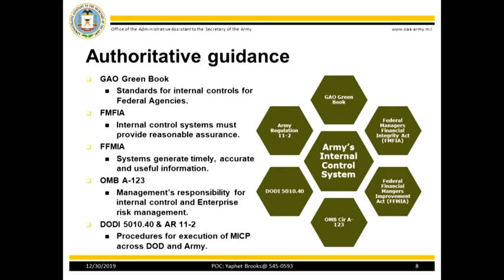The Office of Management and Budget Circular A-123 defines management's responsibility for internal controls. This circular, which was most recently updated in June 2018, adds additional responsibility to management to maintain an enterprise risk management framework within federal agencies. The DODI 5010.40 and Army Regulation 11-2 both assign responsibility and prescribe procedures for the execution of the Manager's Internal Control Program at the DOD level and Army level respectively. These two documents outline the requirements for MICP to be established to review, assess, and report on the effectiveness of internal controls.